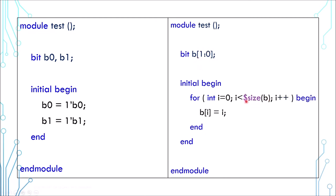We can use a system function called $size to query the size of an array. For example, in this case, you provide b to the function and it would return 2.